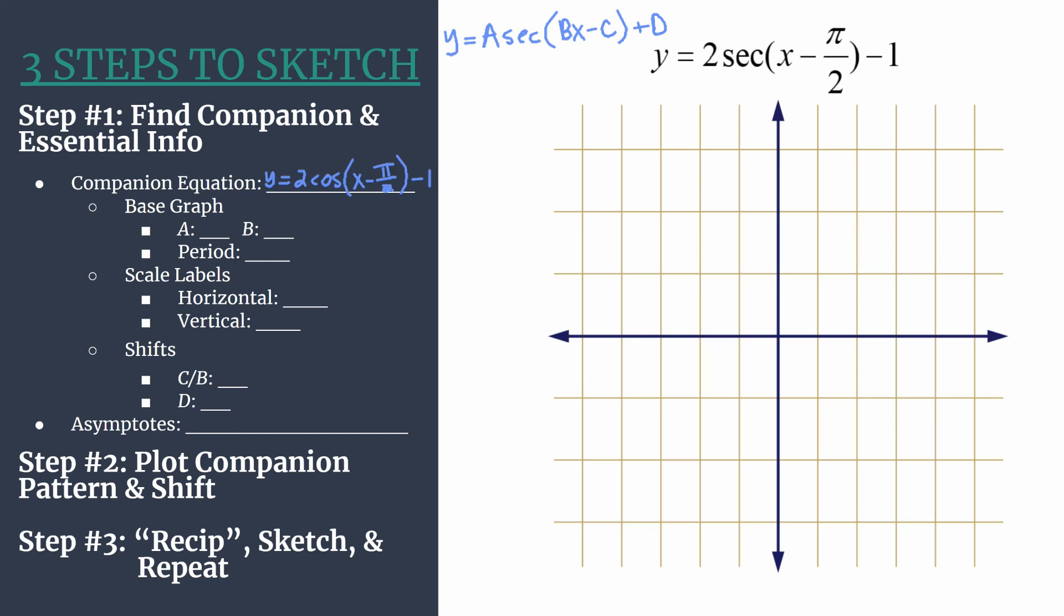Now we can start some analysis. a is that leading coefficient, it's 2 in this case. That'll help us set our maximum and our minimum for our cosine companion pattern in the next step. b is the coefficient in front of x, so we see that that's an understood 1. So we should have one cycle of our graph happening between 0 and 2 pi. And we also use that to find the period. Remember, that's just 2 pi over b. So easy enough, that's 2 pi here.